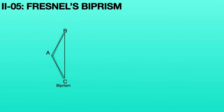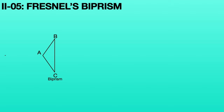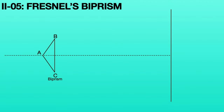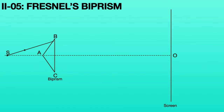Now consider the biprism. The line passing through the center of the biprism is called the principal axis. The line perpendicular to the principal axis and very far from the biprism is called the screen. The screen and principal axis meet at point O. Now consider a light source S on the principal axis. As shown in this animation, the light ray coming from S will be incident on the biprism at edge B. After incidence, the light ray refracts into the biprism, emerges out, and falls at point F on the screen.